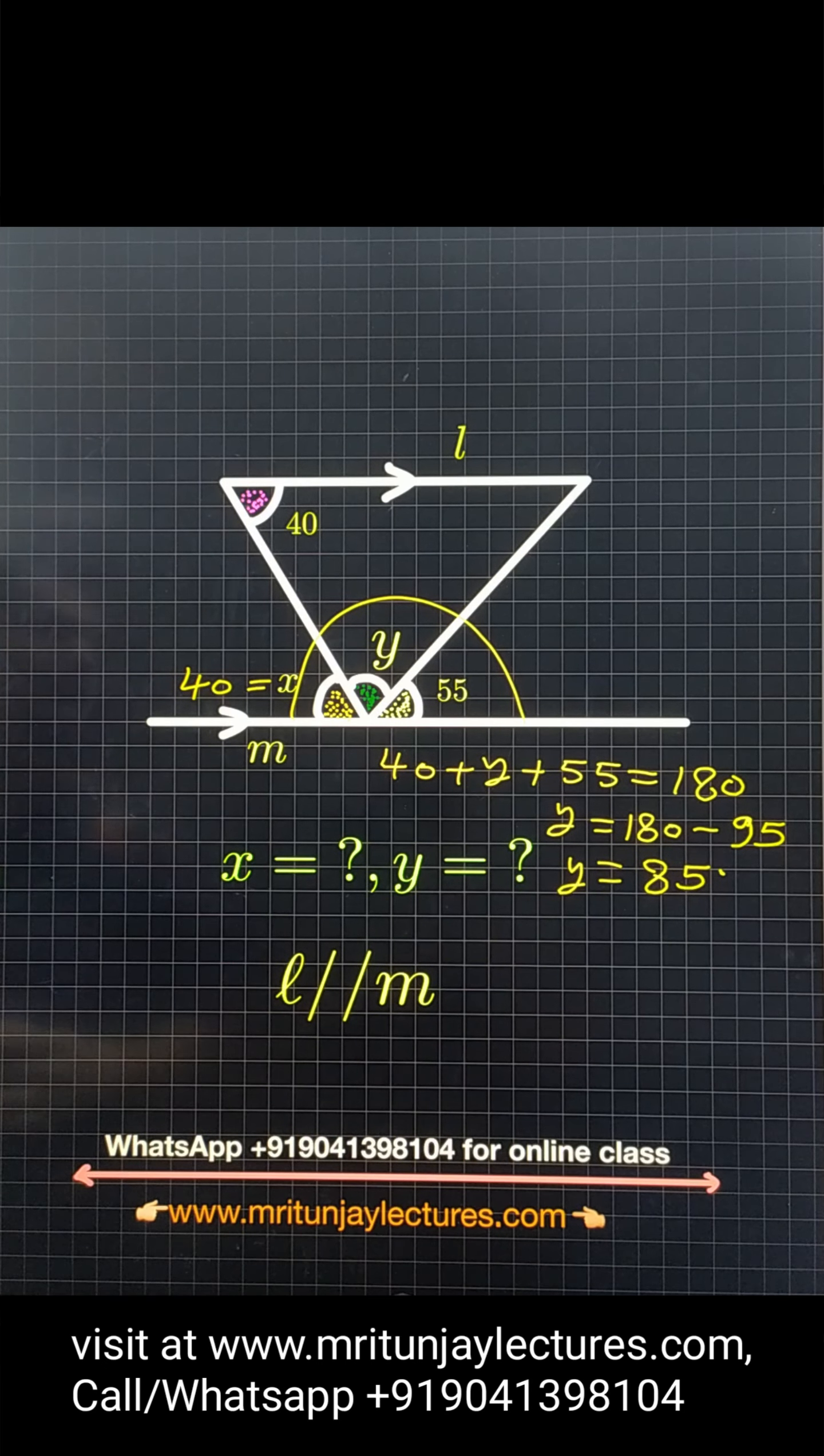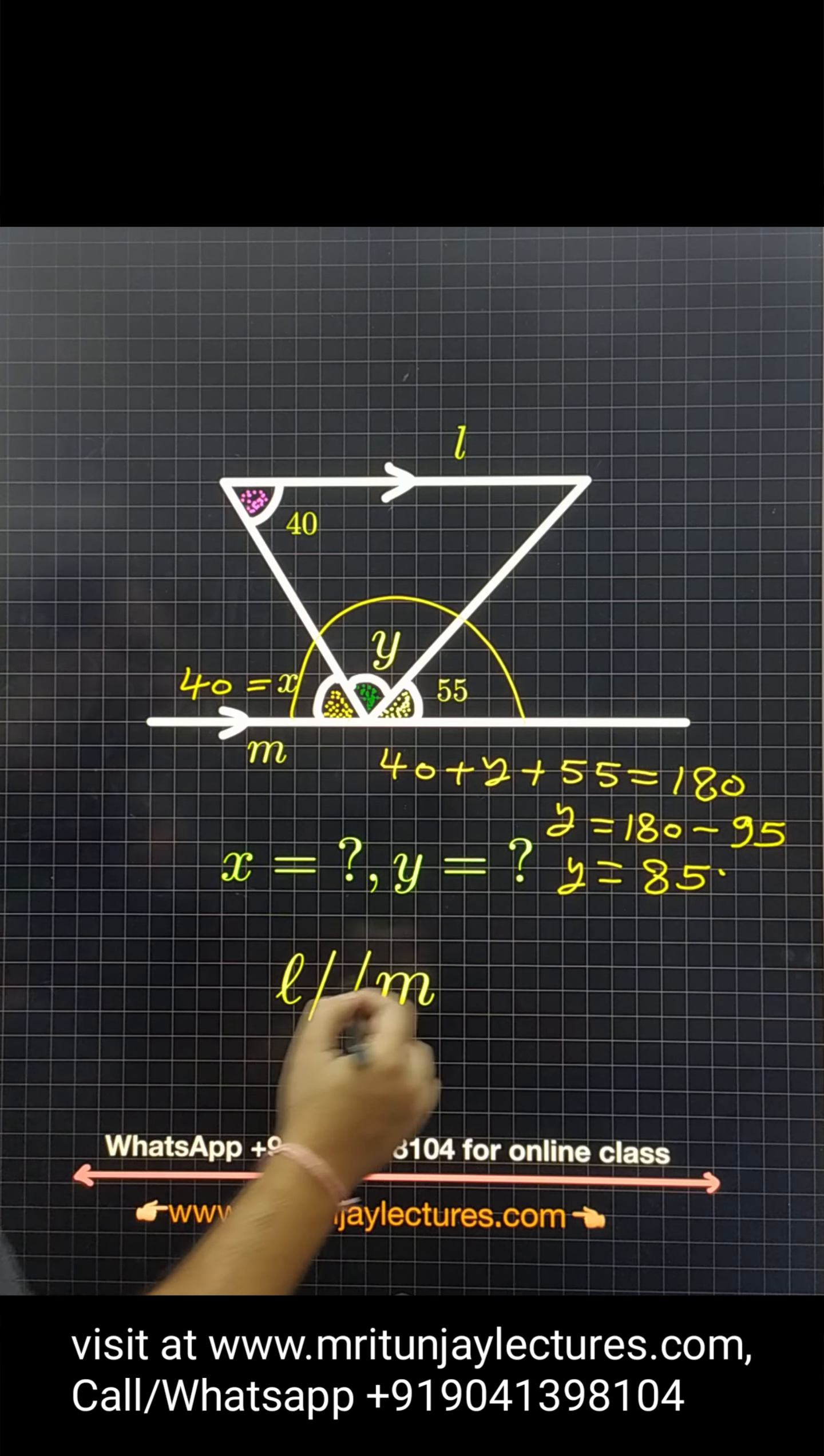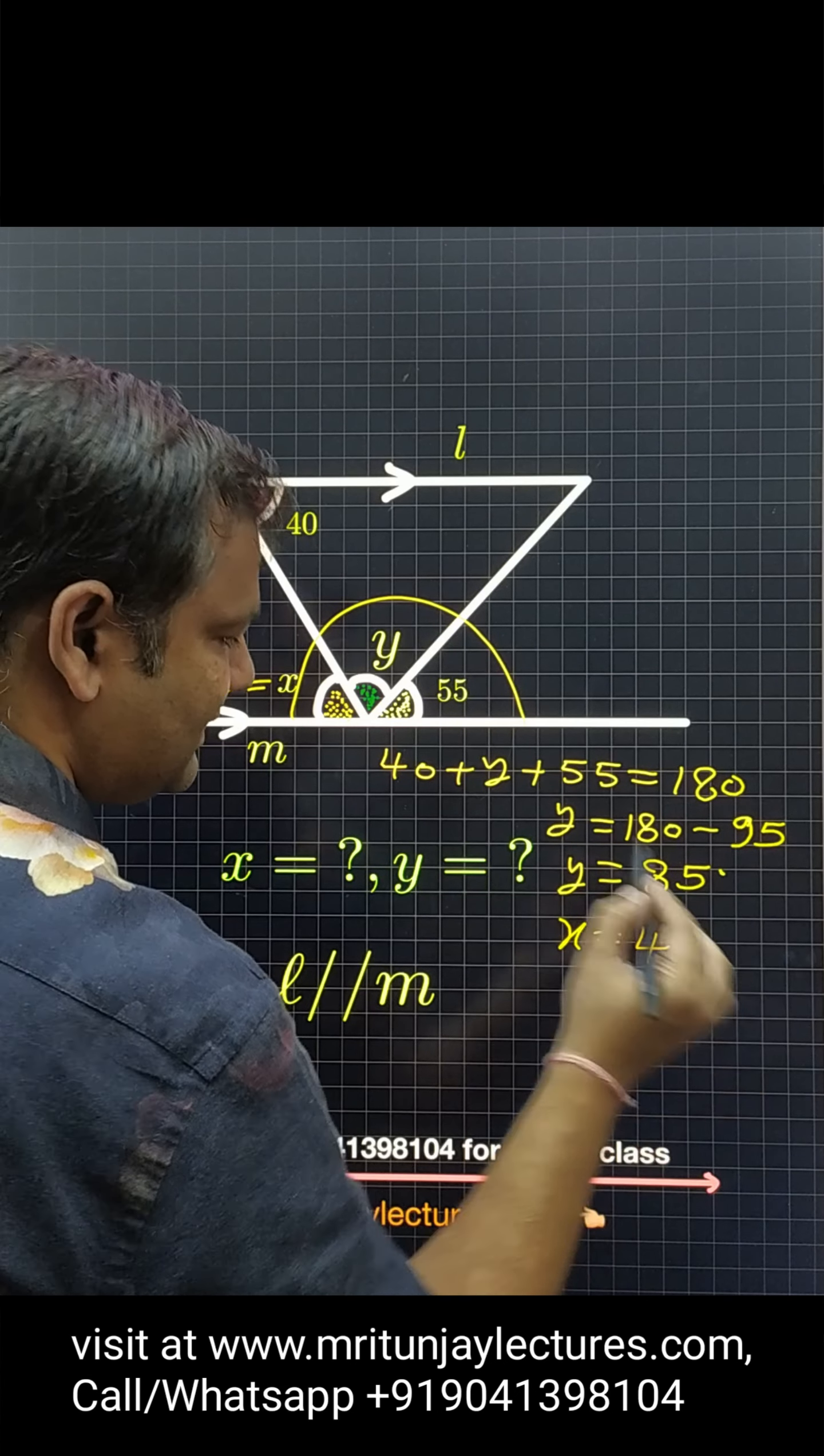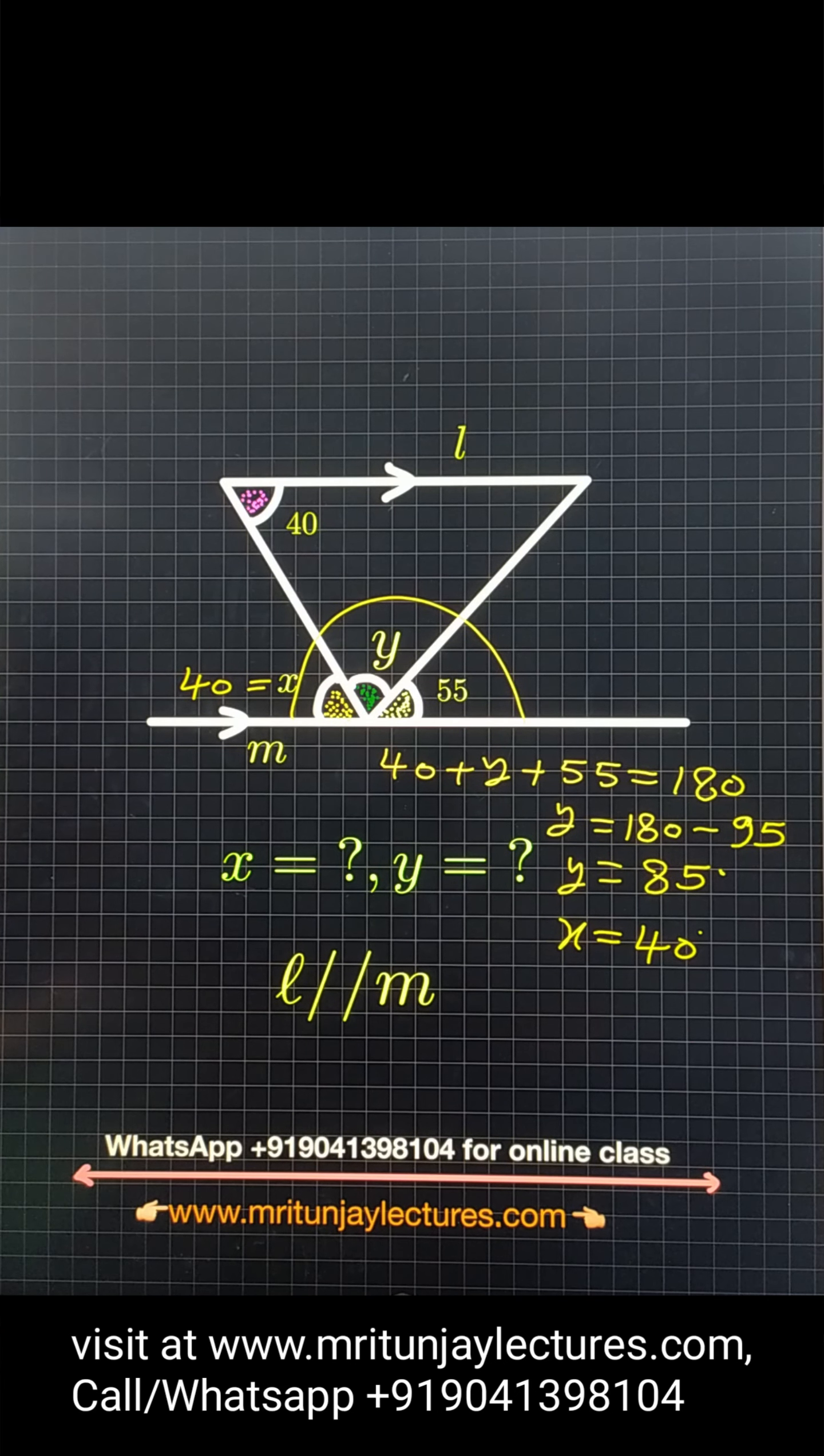And what about x? x is how much? 40 degrees. So x is 40 degrees and y is 85 degrees. This is the final answer. Make it.